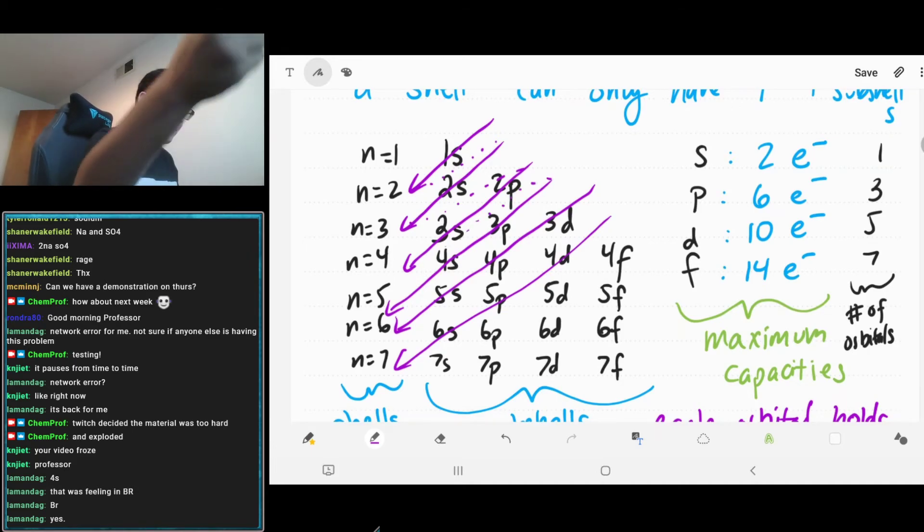And then we go back up. We go through 3p. And 4s. And then we take that back up again. Then 3d, 4p, 5s, 4d, 5p, 6s, etc. So, this is another way that some students like to kind of use as a shortcut to remembering the order of the orbitals.